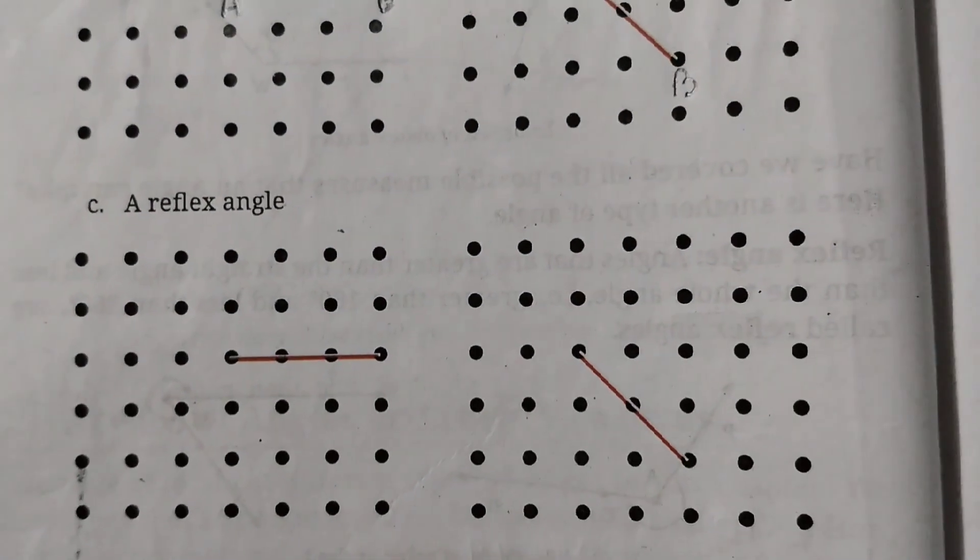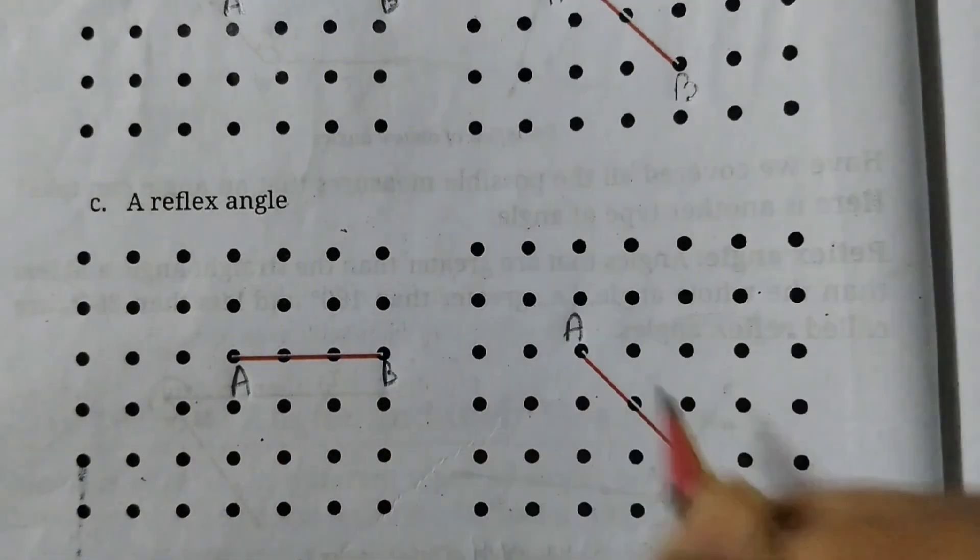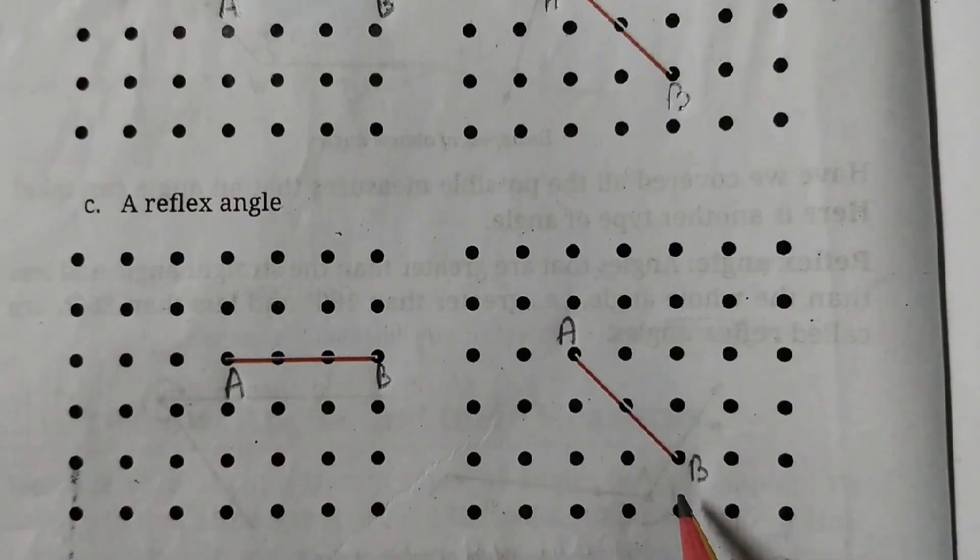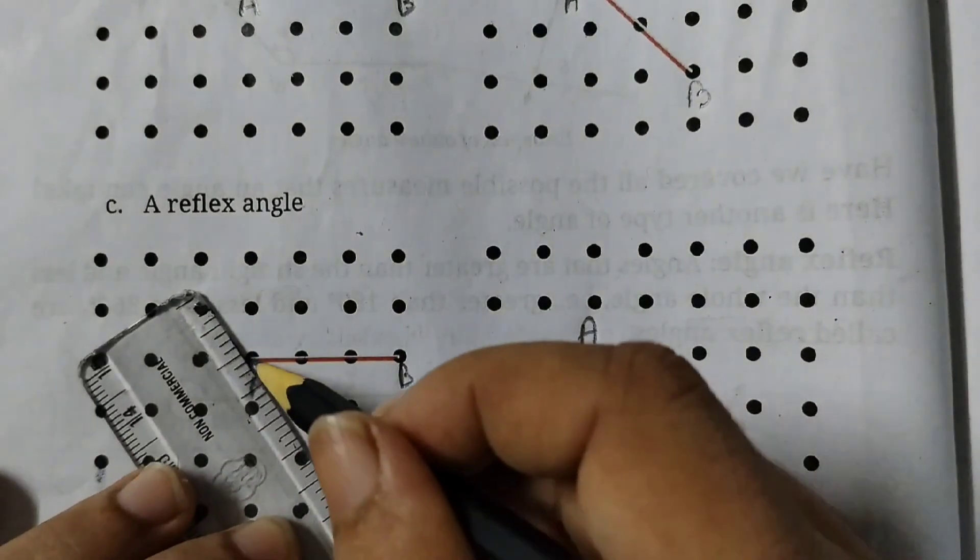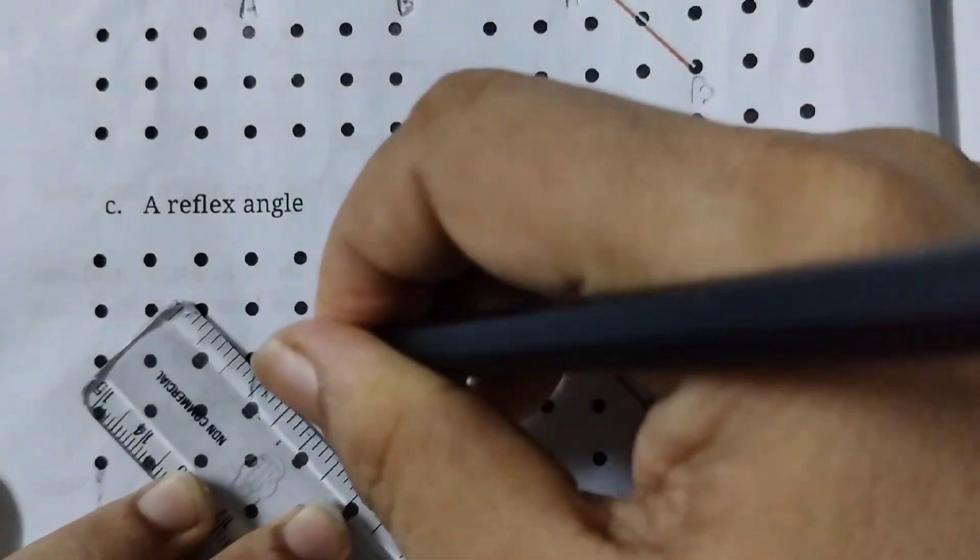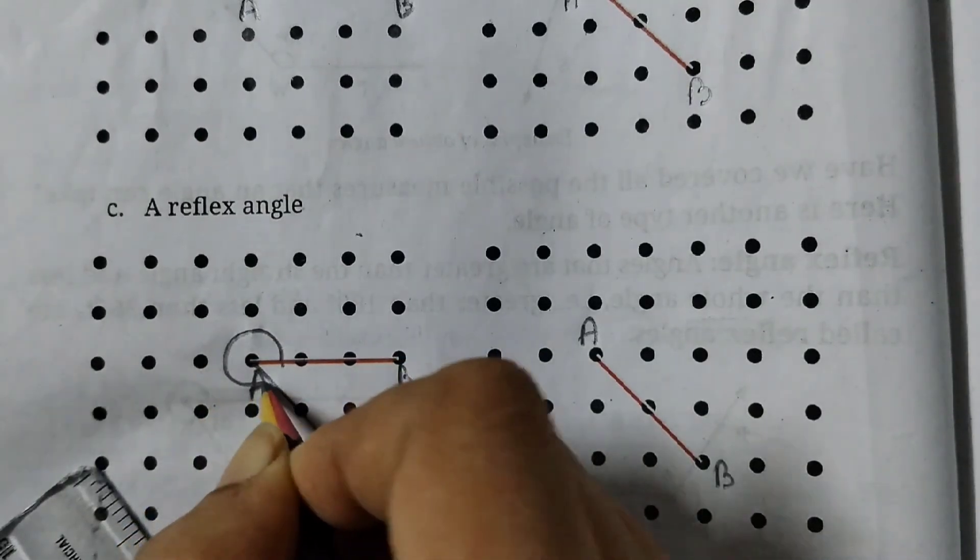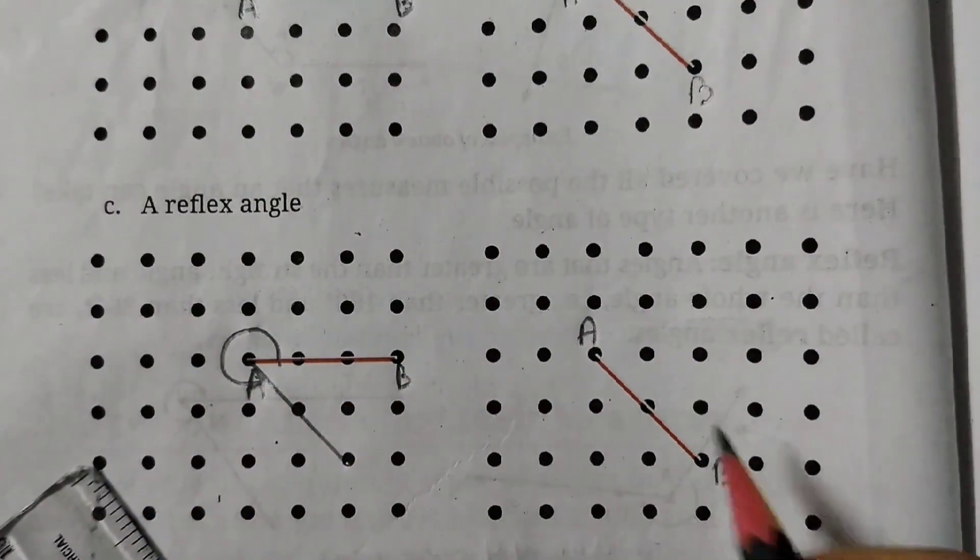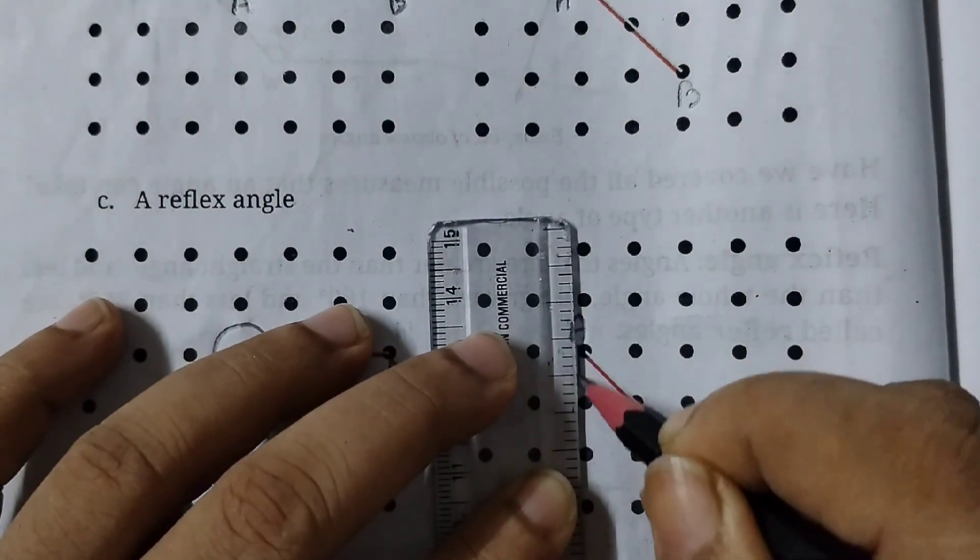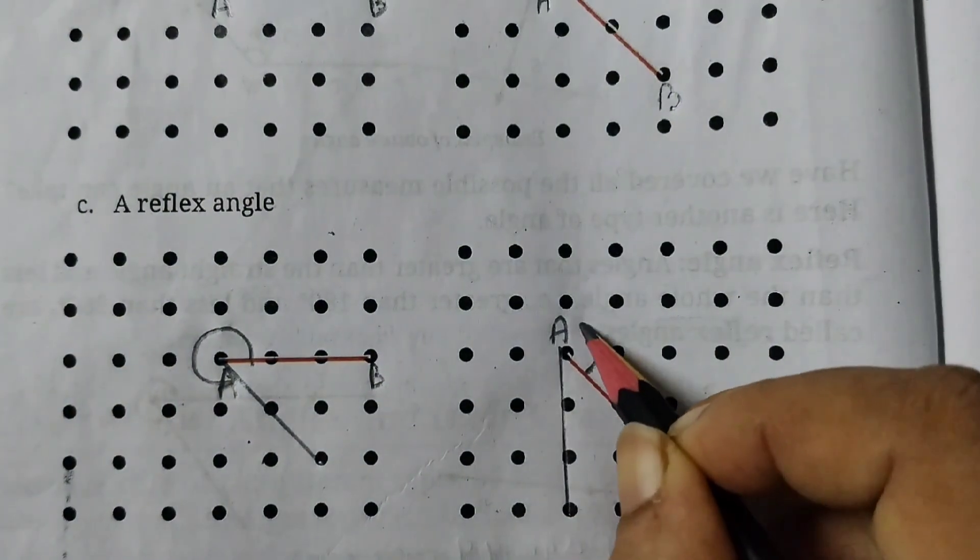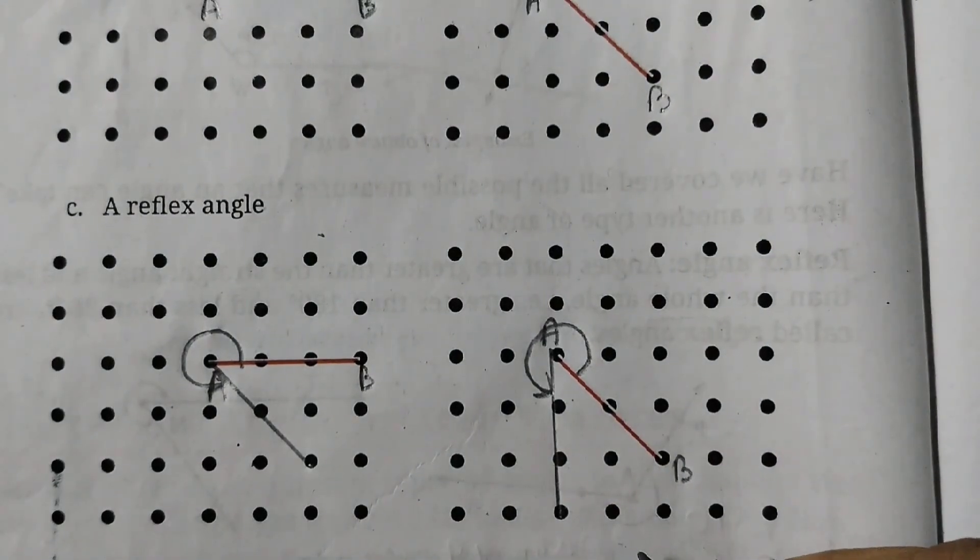Next we have reflex angle. So reflex, first label it AB and this one also AB. Reflex is more than 180, less than 360. So this is 270 and we can draw like this. This angle here, starting from here till here. This is the reflex angle. And for this one we can show like this. This is the curve. So this is how you can show the reflex angle.